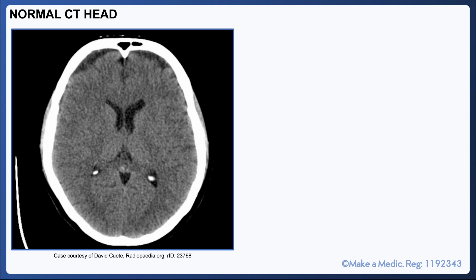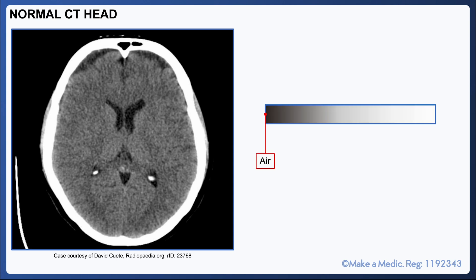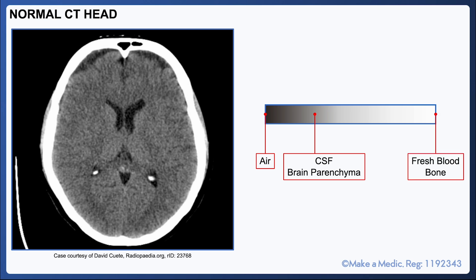CT head scans can be complicated to interpret, so we're only going to focus on the main conditions most likely to come up in exams and clinical practice. First, let's look at what the colors on a CT head scan mean. In general, black is air, various shades of dark gray are CSF and brain parenchyma, and on the white or hyperdense end of the spectrum is bone and acute bleeds.